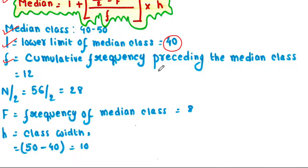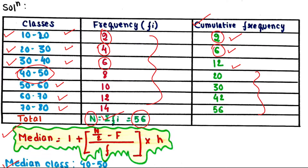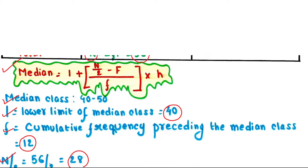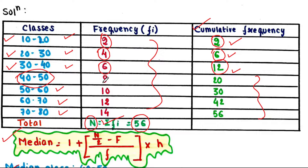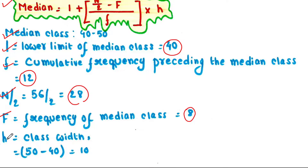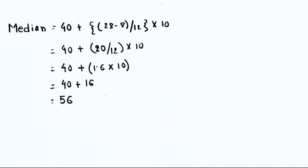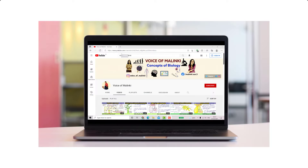The class 40 to 50 is the median class. L, the lower limit of the median class, is 40. F, the cumulative frequency preceding the median class, is 12. n divided by 2 equals 56 divided by 2, which is 28, since n equals 56. f, the frequency of the median class, is 8, and h, the class width, is 50 minus 40 equals 10. Putting all these values into the formula, the median is 56.